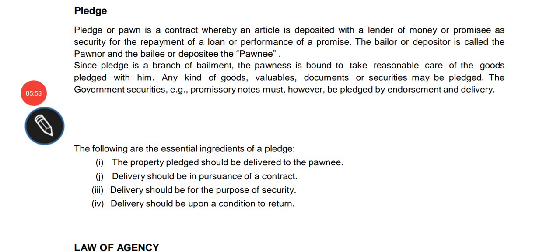In case of pledge, the pawnee retains the goods until payment of the debt or performance of the promise. In case of hypothecation, since possession remains with the owner, the pawnee does not have a lien. However, in case of default, the hypothecatee may sell the property. That is the key difference between pledge and hypothecation.